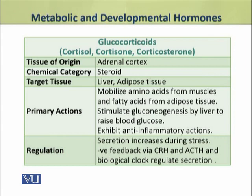Glucocorticoids — which include cortisol and corticosterone — are produced by the adrenal cortex and are steroid hormones. Their target tissues are the liver and adipose tissue. Their primary actions are to mobilize amino acids from muscles and fatty acids from adipose tissue. They stimulate gluconeogenesis by the liver and as a result raise the blood glucose level. They also exhibit anti-inflammatory actions. Their secretion is increased during stress and is regulated by negative feedback through CRH and ACTH from the hypothalamus and pituitary, and also by a biological clock.